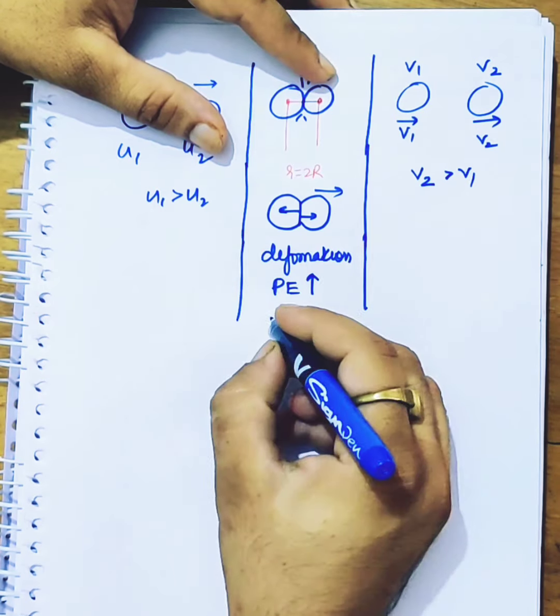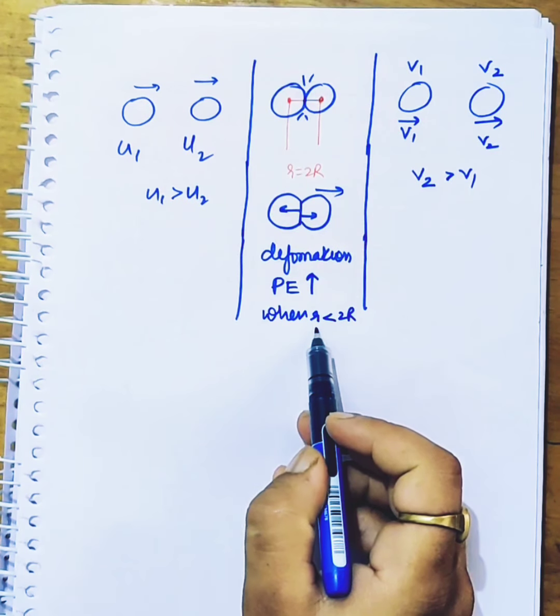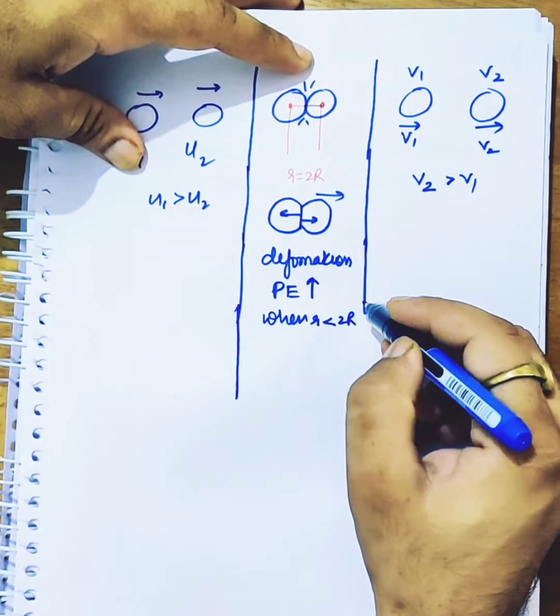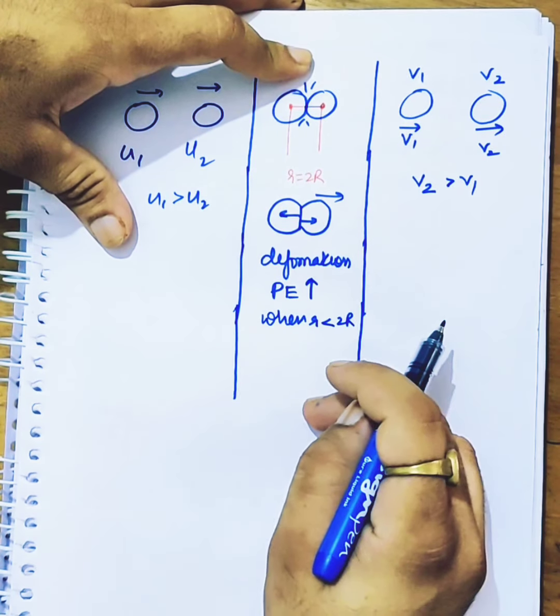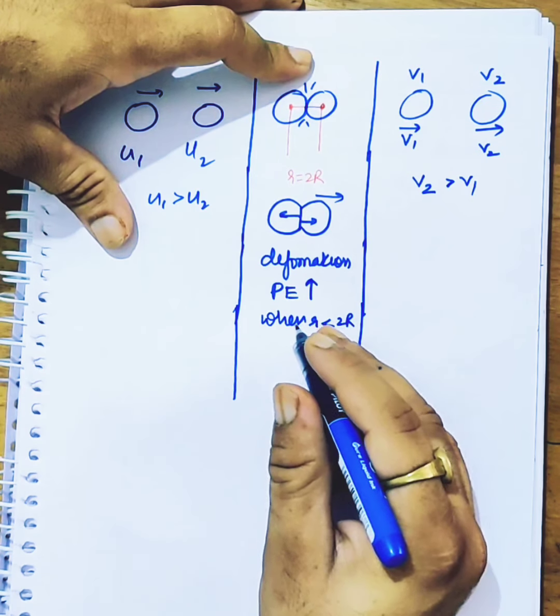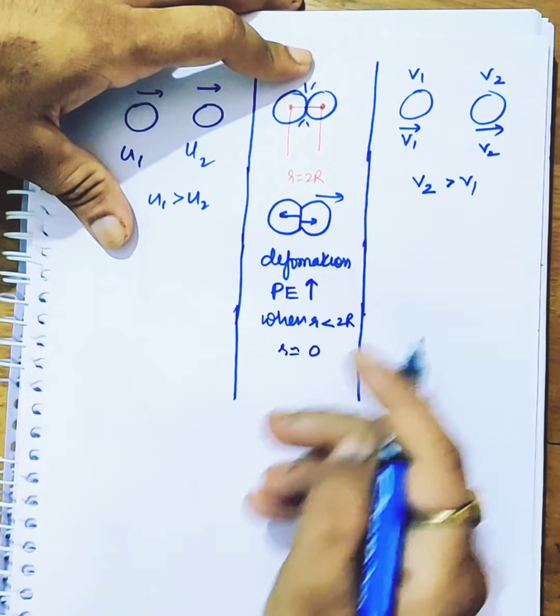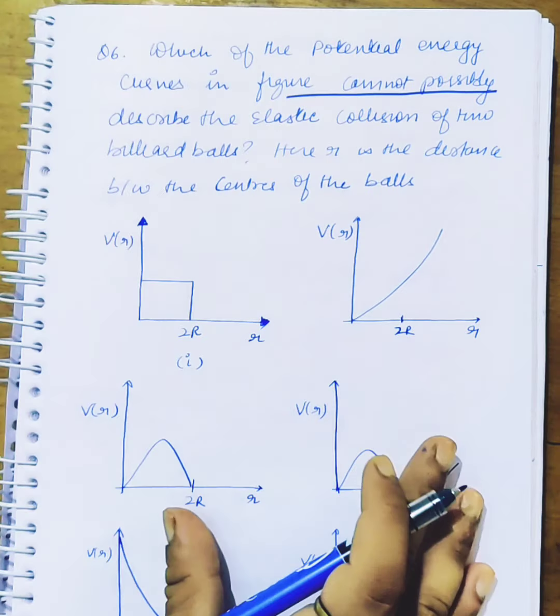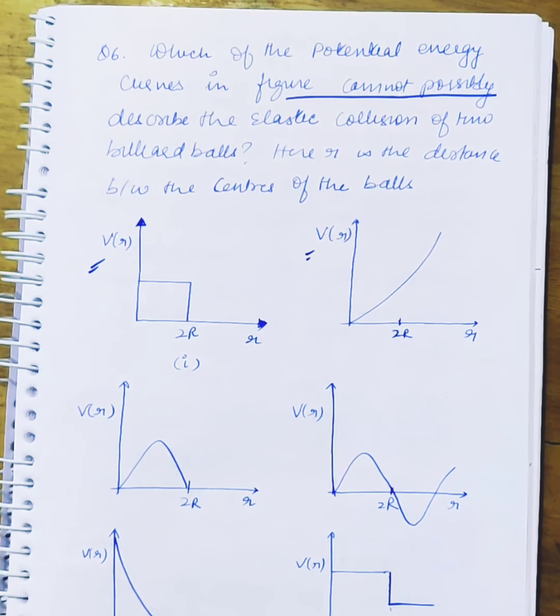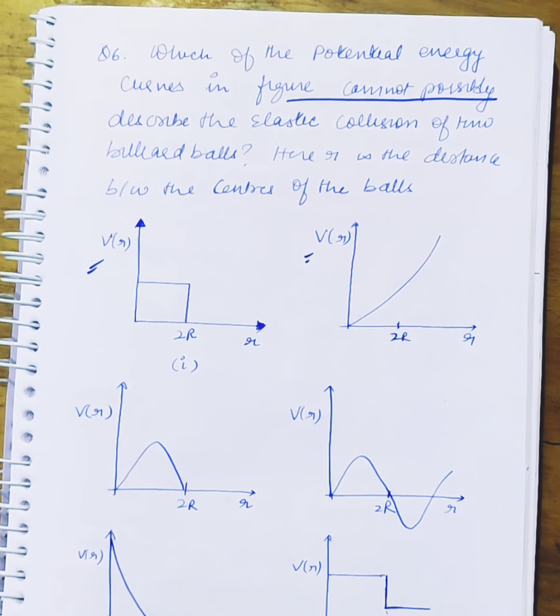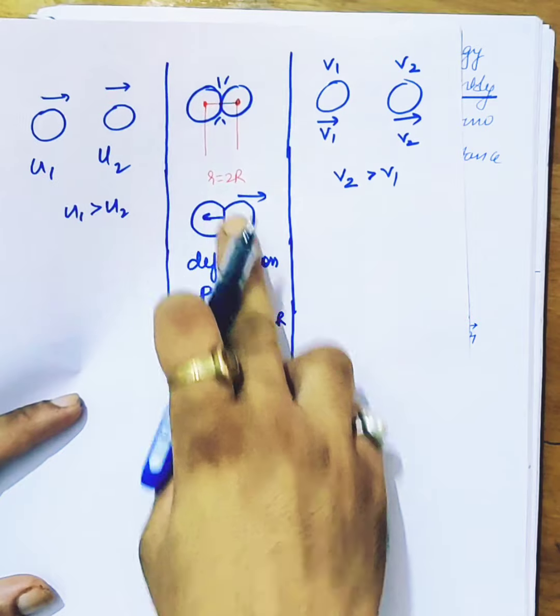Potential energy increases when R is less than 2R. As you start using 2R, there is less distance between centers. Potential energy increases. When R is less than 2R, then the potential energy increases. When R is equal to 2R, there is no deformation yet. This time potential energy has just been zero.